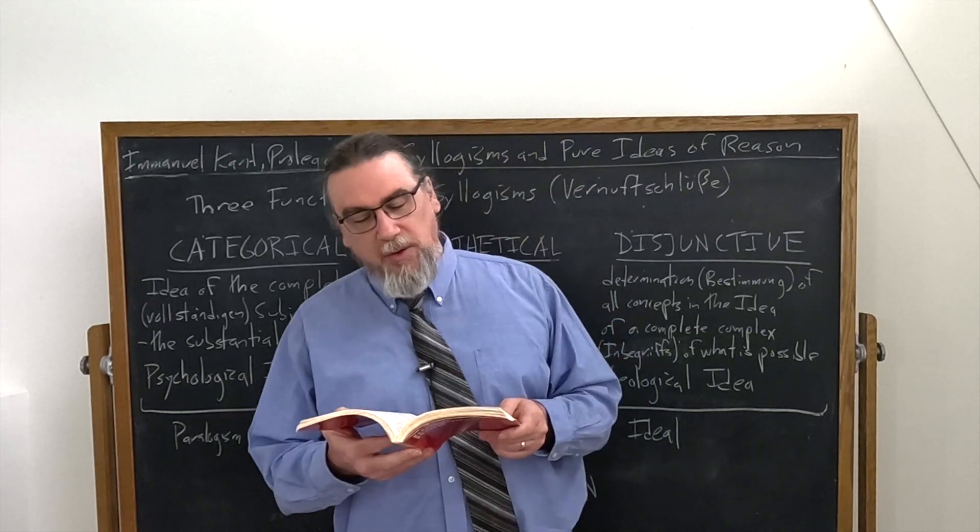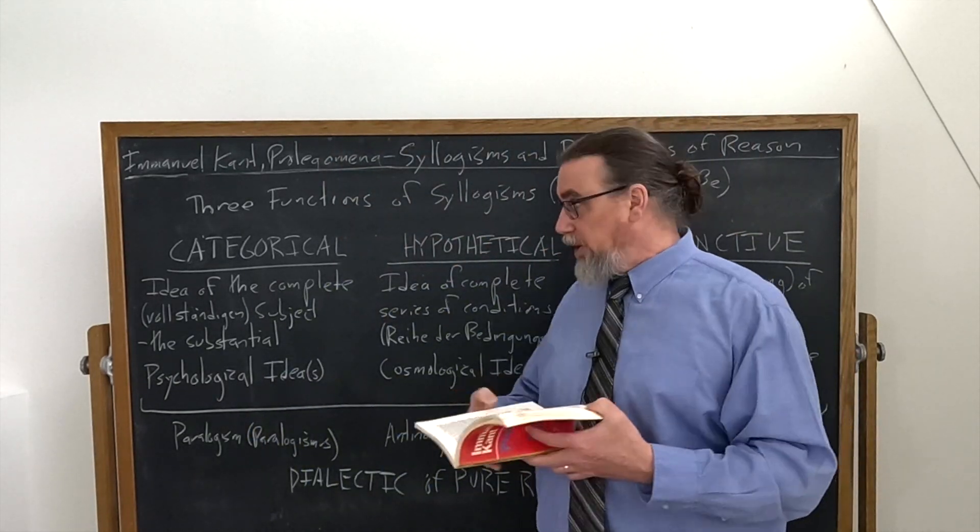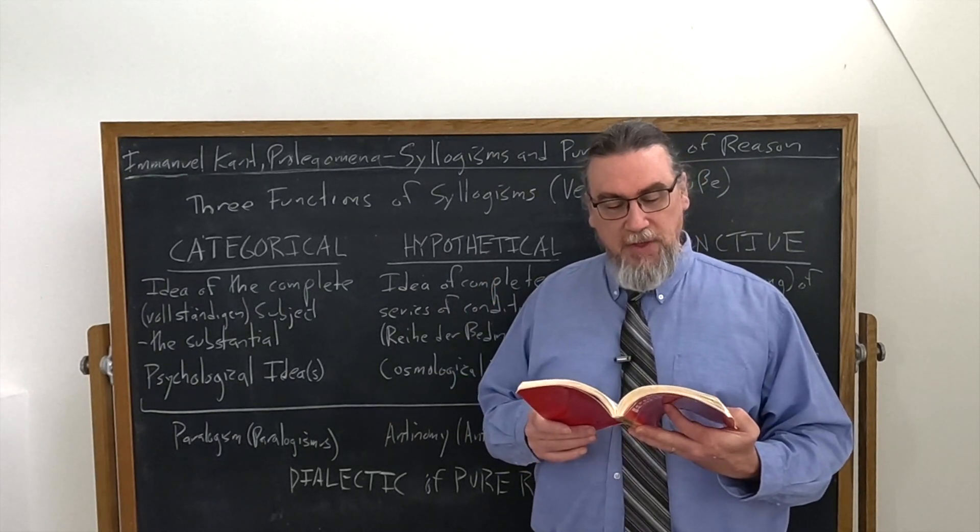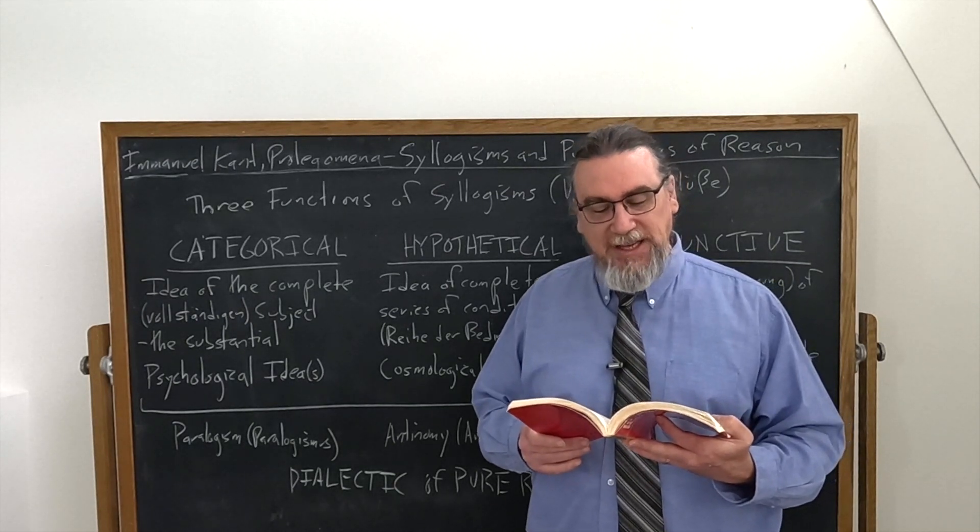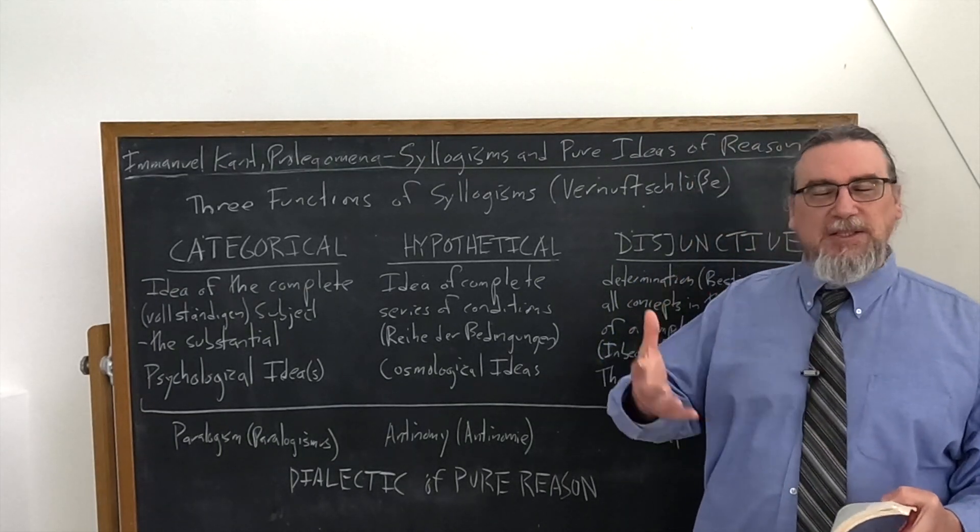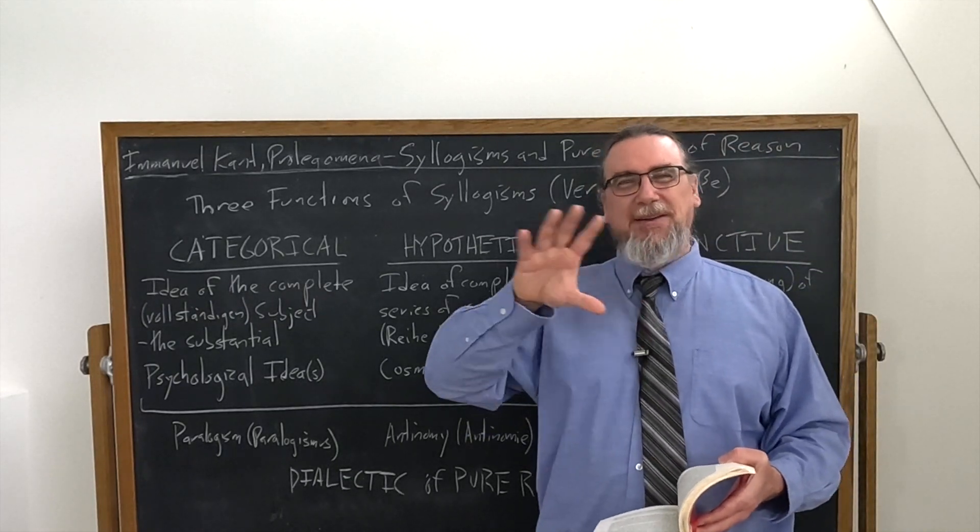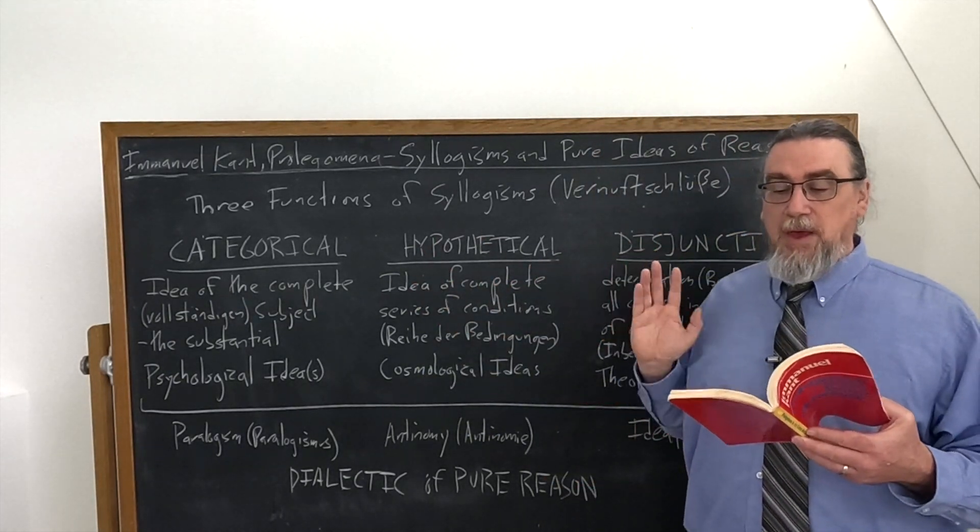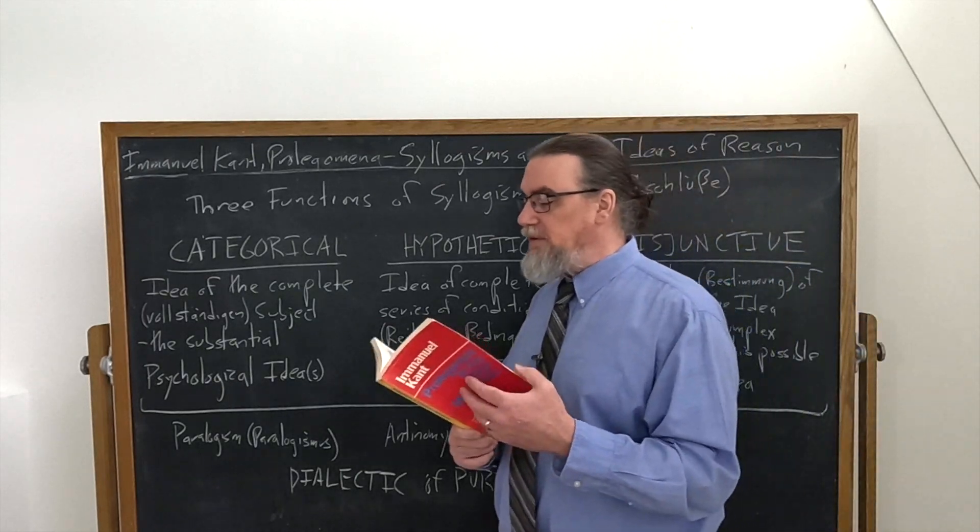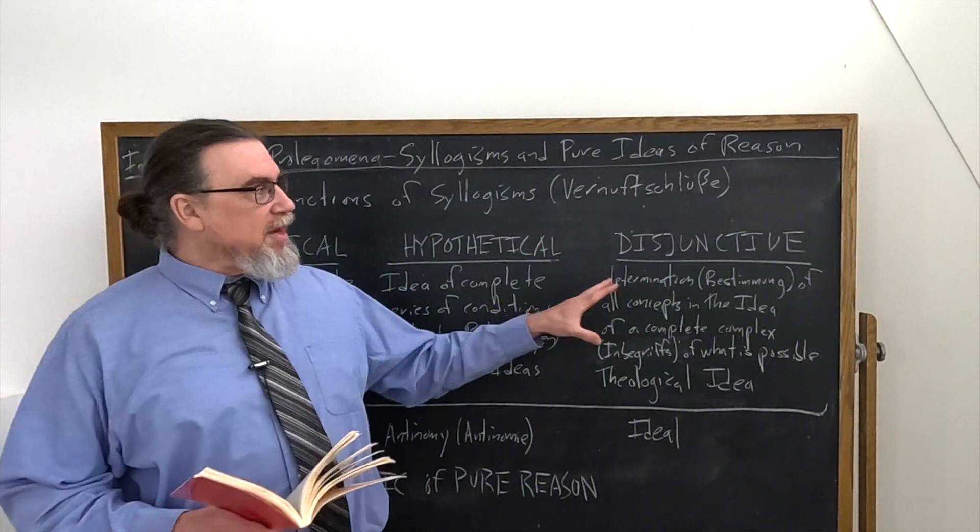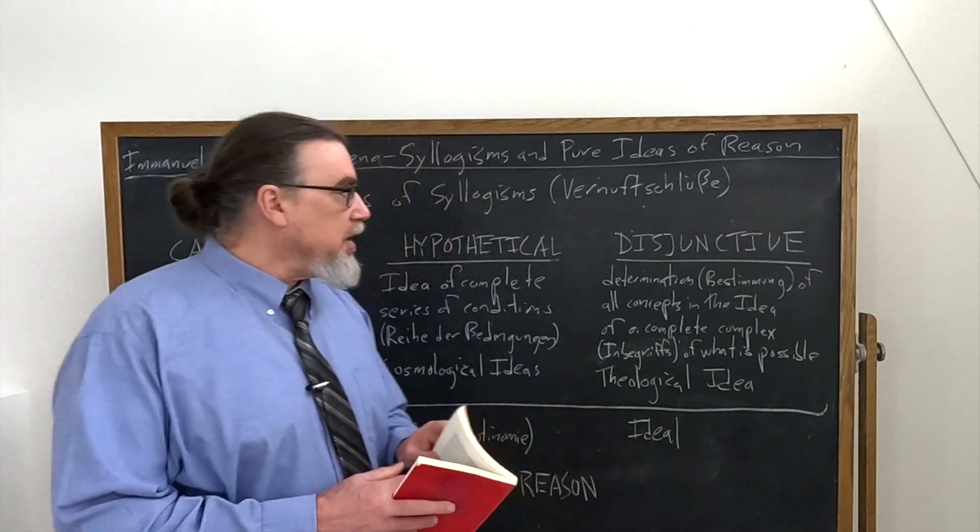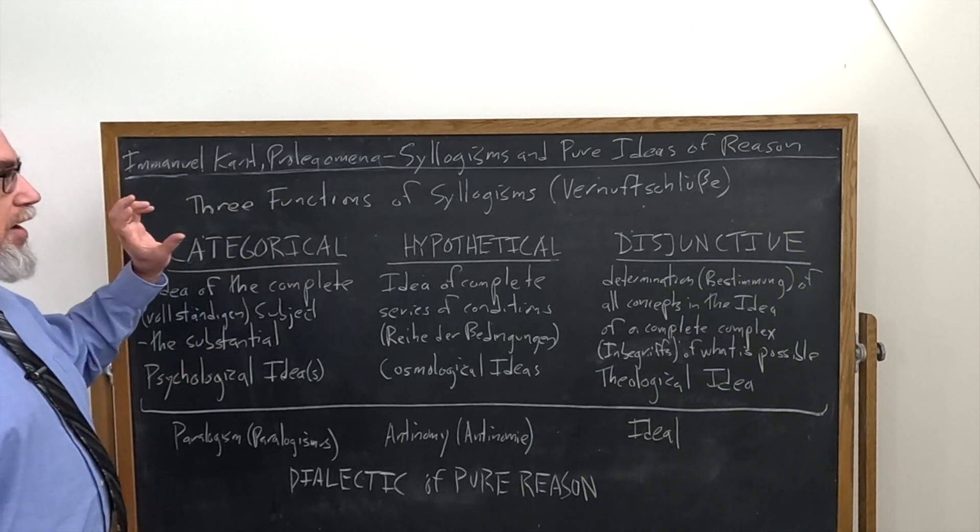He says, whether the soul is or is not a simple substance, that's something that we're going to look at under the psychological idea. Makes sense. Psyche is soul. And then he goes on, likewise, the cosmological ideas of the beginning of the world or its eternity. He's also going to talk about causality, whether we are free or not in that. And then he says, finally, we have the design of nature is being drawn from the will of a supreme being. That would be a part of the theological idea right there, wouldn't it? So, each of these is connected to a particular kind of syllogism. Each of these is an idea.